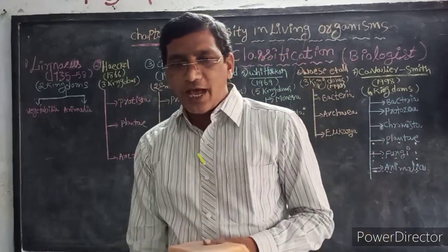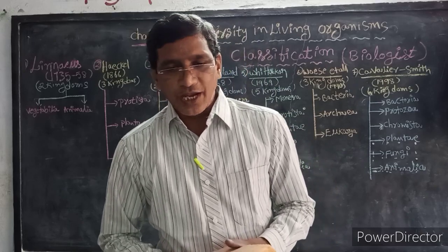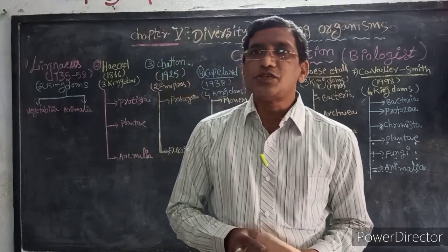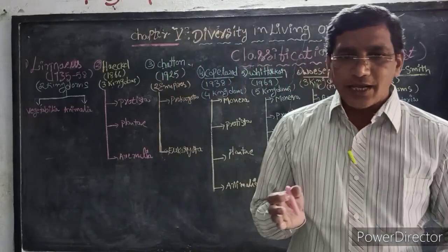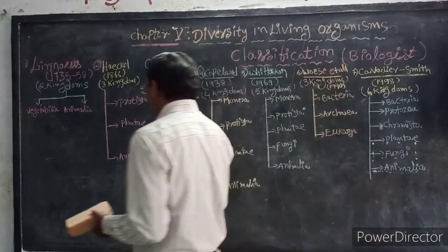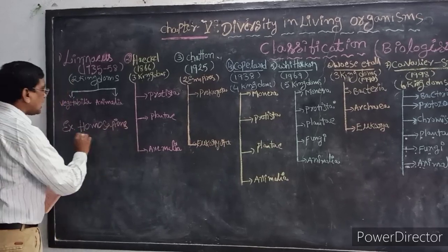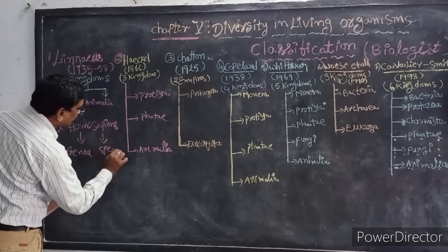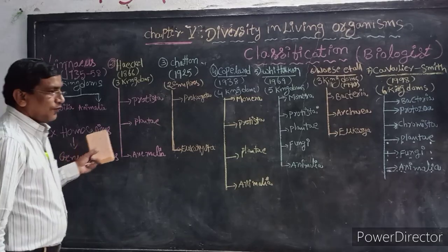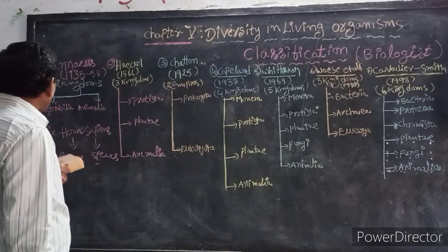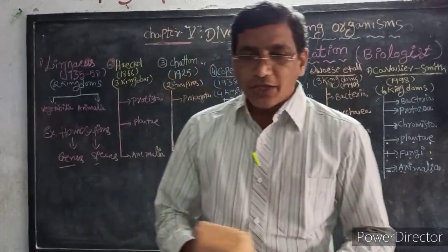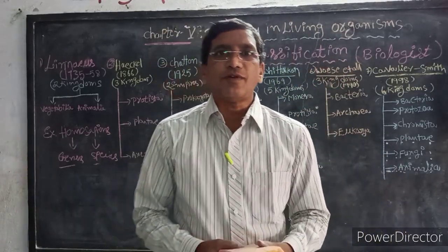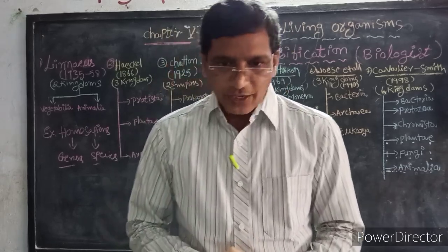Carolus Linnaeus proposed a classification system that dominated the classification of organisms for centuries. Linnaeus gave each organism two names: the first is the genus and the second is the species. For example, the scientific name of human beings is Homo sapiens — Homo is the genus and sapiens is the species. This classification system is called binomial nomenclature.